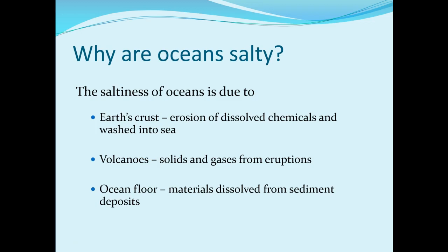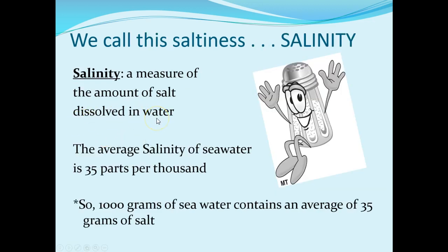Water is a universal solvent — it does a wonderful job of dissolving almost everything. So once it's in the water, the saltiness — what we call salinity — is a measure of the amount of salt dissolved in a particular amount of water. The average salinity of seawater is 35 parts per thousand, meaning that for every 1,000 parts of water, 35 of those parts are salt. So for 1,000 grams of seawater, it would contain 35 grams of salt.